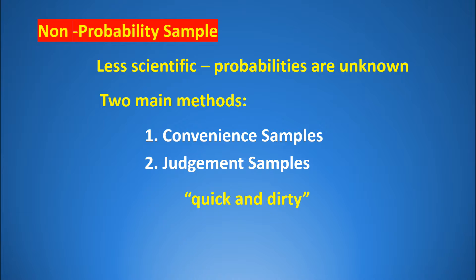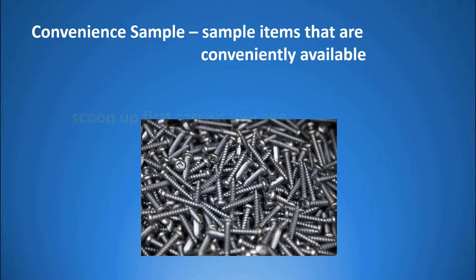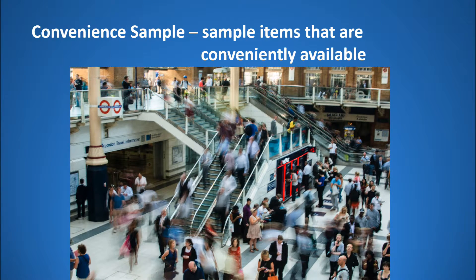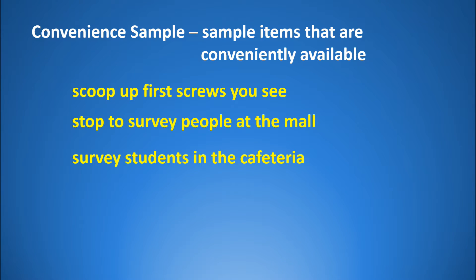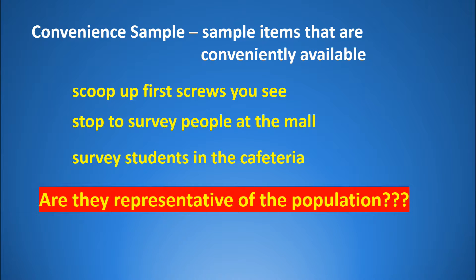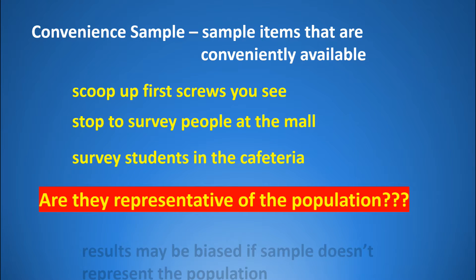A convenience sample is exactly what it sounds like — sampling items that are conveniently available. Walking into the factory and scooping up the first handful of screws, surveying shoppers at the mall, or sampling students in the cafeteria are all convenience samples. They are easy and inexpensive, but not very scientific. Students in the cafeteria may differ from students rushing off to work or daycare. The question is whether they are representative of the student population — if not, your results may be biased.